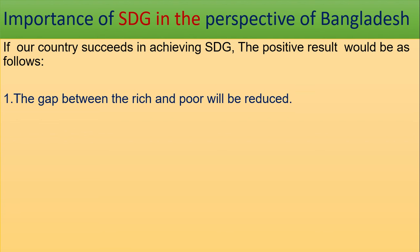Now we have to achieve SDG if we want to build Digital Bangladesh and become a middle income country by 2021. By this, the gap between the rich and poor will be reduced. If poverty is removed from all spheres of life, the state will be able to ensure the fundamental needs of the people.